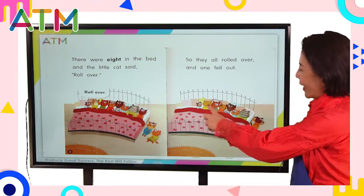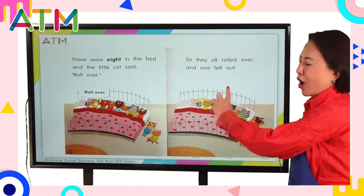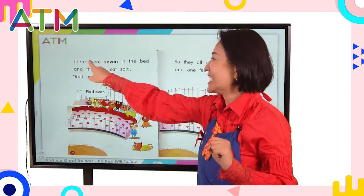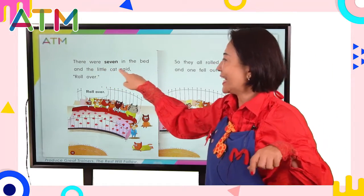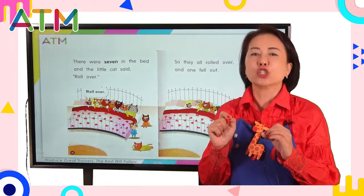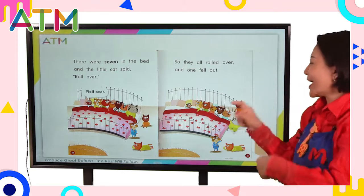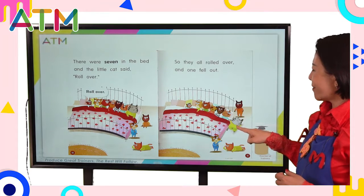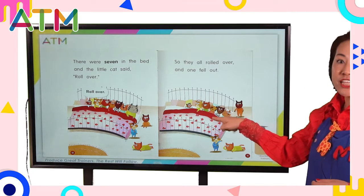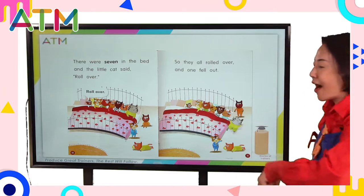Actually, we've got three facing down. Let's count together: one, two, three... six, seven. There were seven in the bed, and the little cat said — I think she raised her voice and said — 'Roll over!' So they all rolled over, and one fell out. We've got one, two, three, four, five, six in the bed — this one is facing down — and one, two, three, four on the floor.